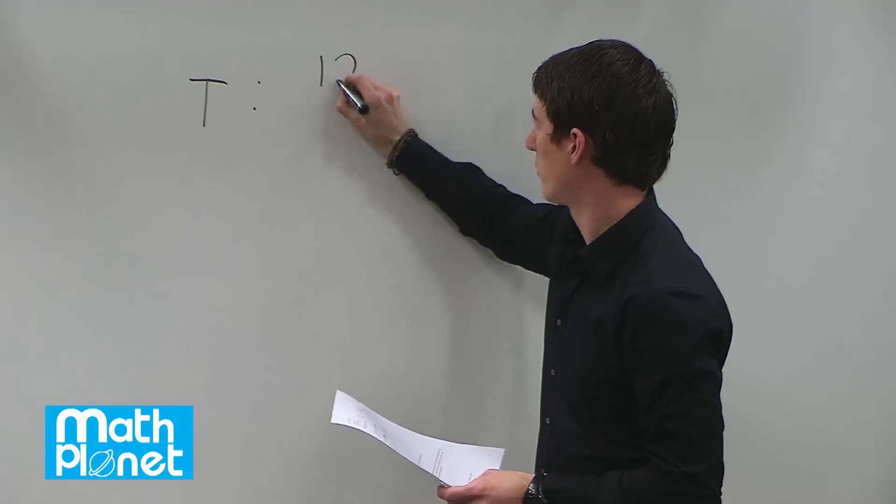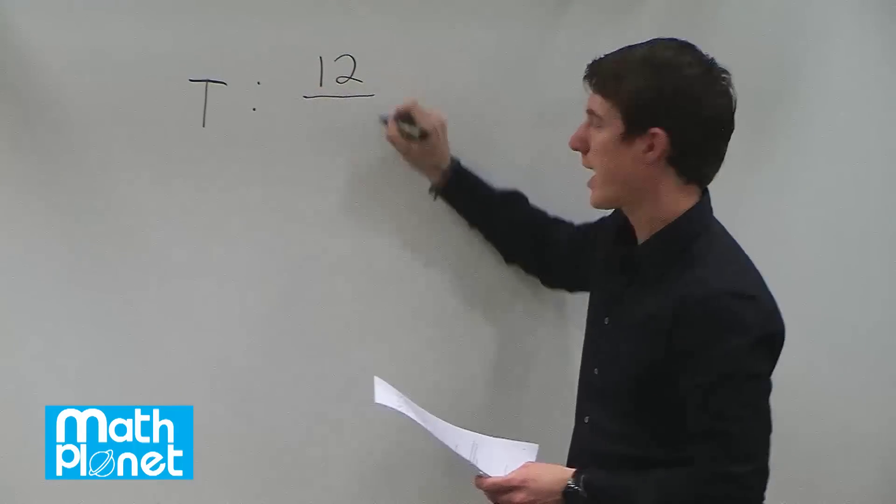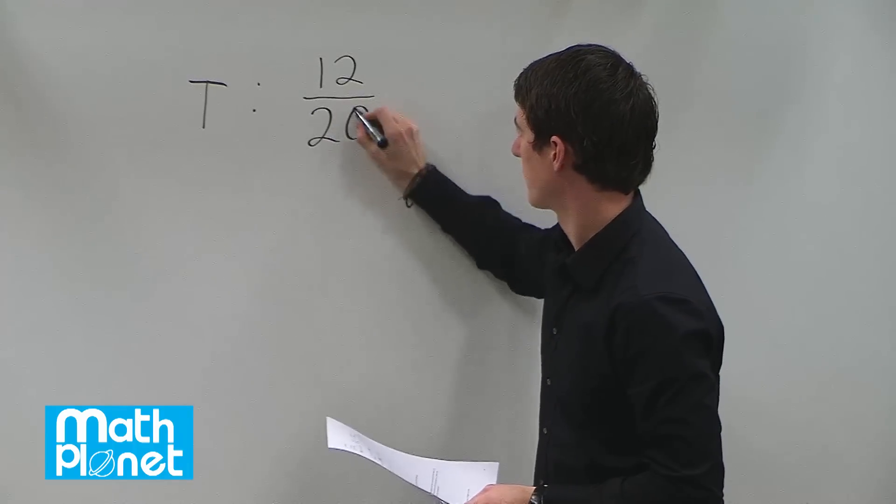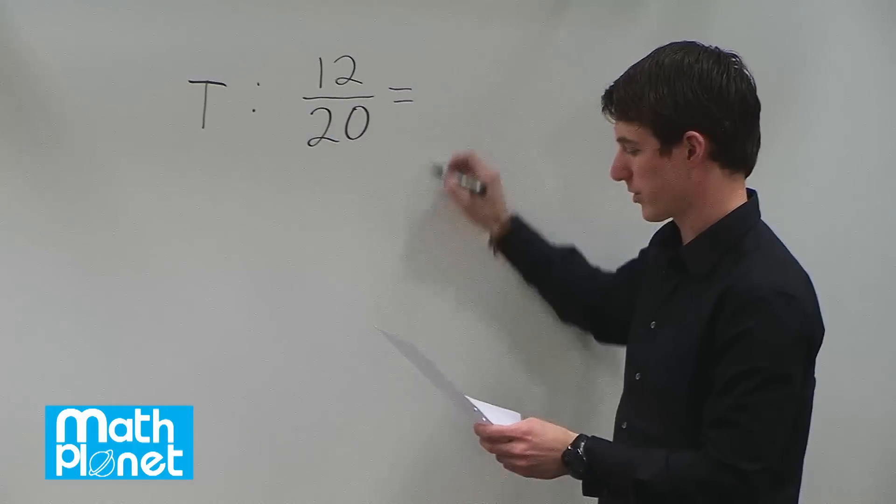So the total chocolate bars was 12 at the beginning and we divide that by the total number of bags in general, which was 20. So her probability was 3 fifths.